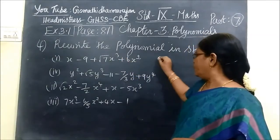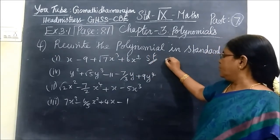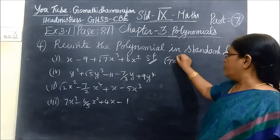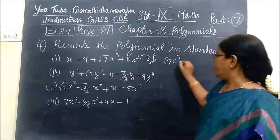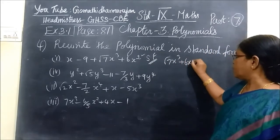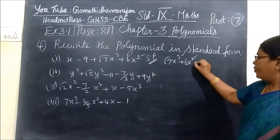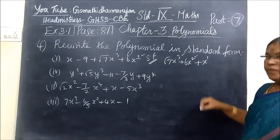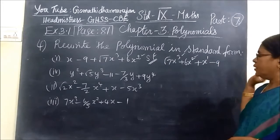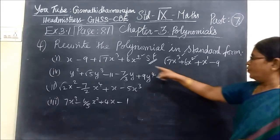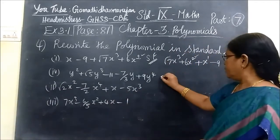Here, writing in standard form: equal to root 7 x cubed — the power is 3. Then the next one, the power is 2: 6 x squared. So power 3, power 2, then power 1, then power 0 — here 9. So 4 terms are written in standard form.